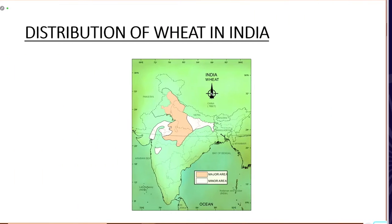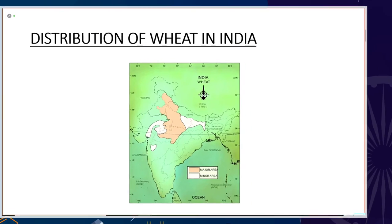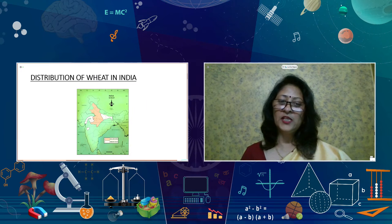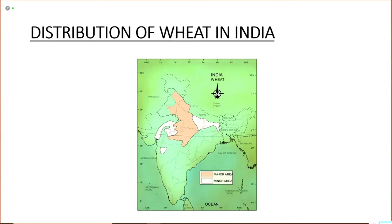This map is very important from the board exam point of view, as they sometimes ask you to mark the wheat or rice growing areas. Wheat is grown mainly in Punjab, Haryana, Uttar Pradesh and Madhya Pradesh. It is also grown in the eastern part of UP, Bihar, the eastern part of Rajasthan, Gujarat and the western part of Madhya Pradesh.